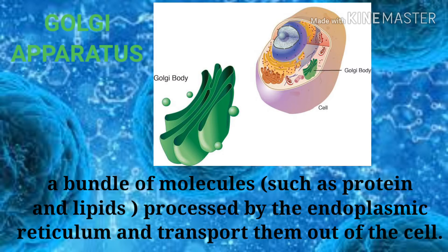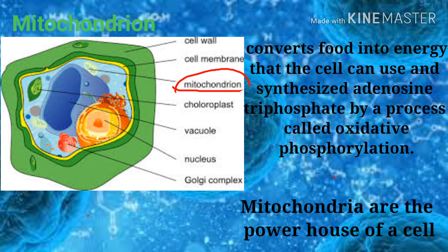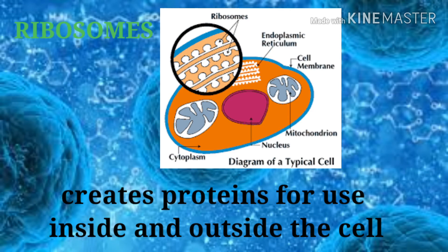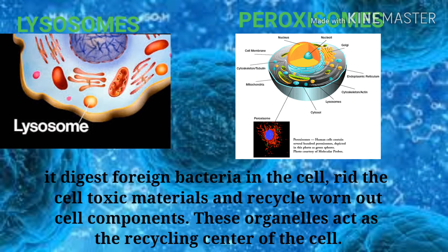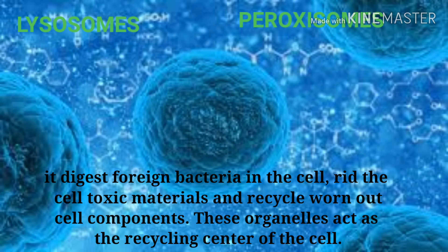The Golgi apparatus processes proteins and lipids from the endoplasmic reticulum and transports them out of the cell. The third is the mitochondrion, which converts food into energy that the cell can use and synthesizes adenosine triphosphate by a process called oxidative phosphorylation — mitochondria are the powerhouse of the cell. The ribosome creates proteins for use inside and outside of the cell. The lysosome and peroxisome digest foreign bacteria in the cell, remove toxic materials, and recycle worn-out cell components, acting as the recycling center of the cell.